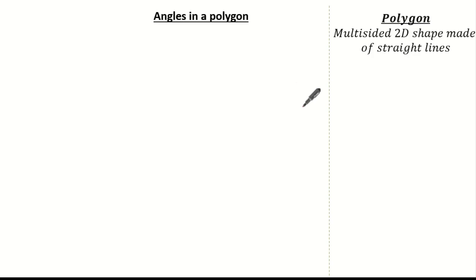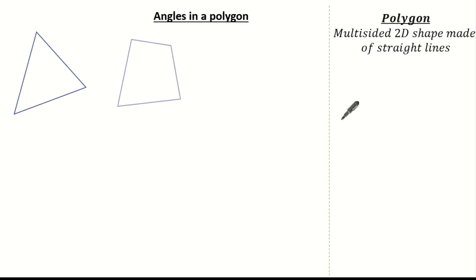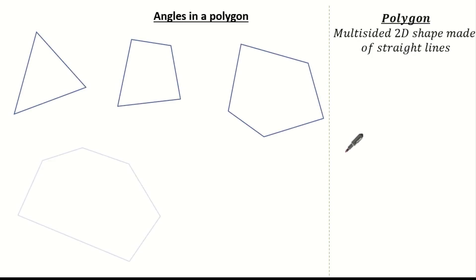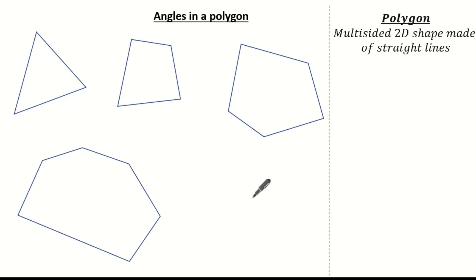So let's have a look at the definition of polygon. A polygon is a multi-sided 2D shape made of straight lines. All of these are examples of polygons because they're 2D shapes and they're made of straight lines.